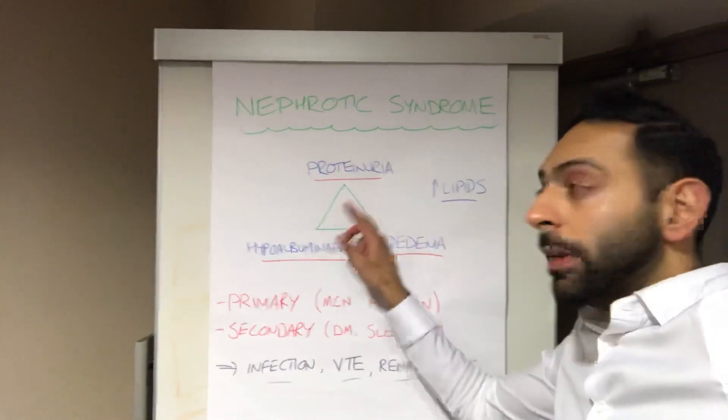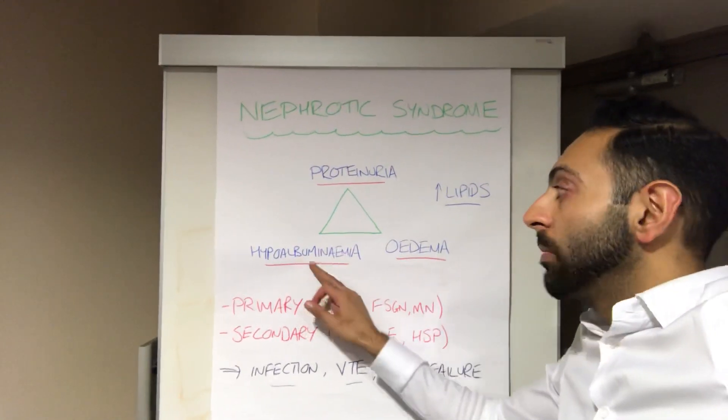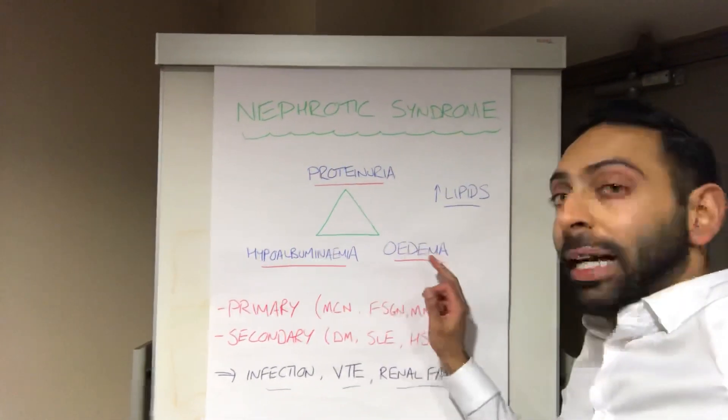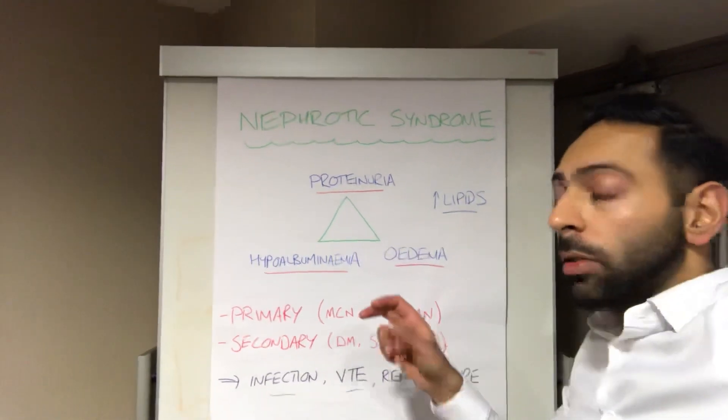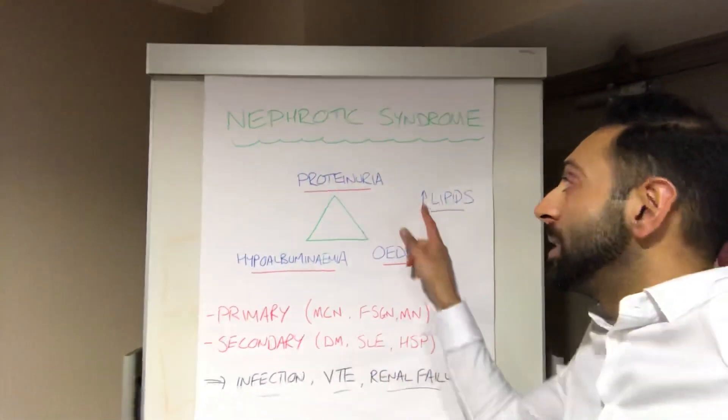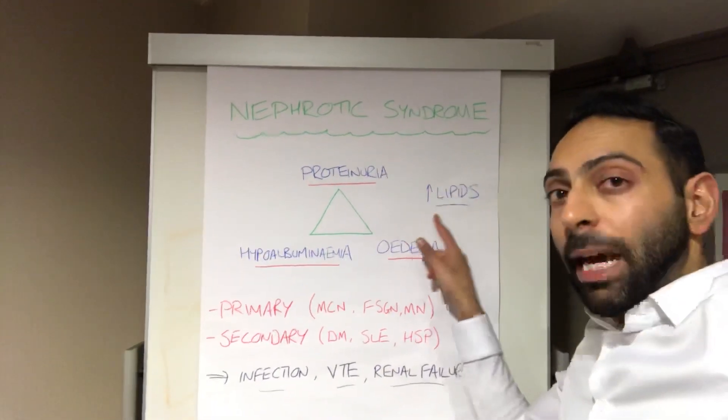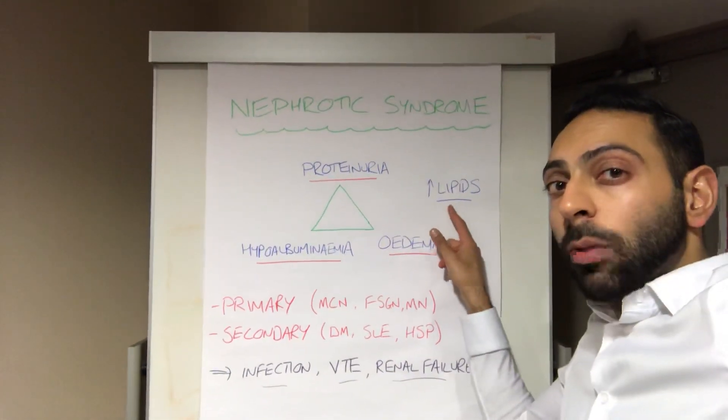So protein in the urine, low levels of albumin in the blood, and swelling — for example of the ankles. Also hyperlipidemia can happen as well.